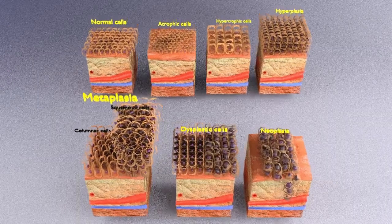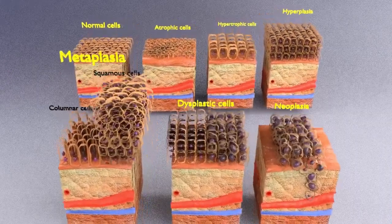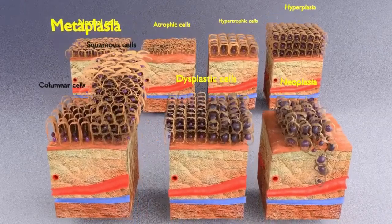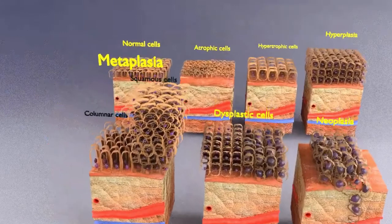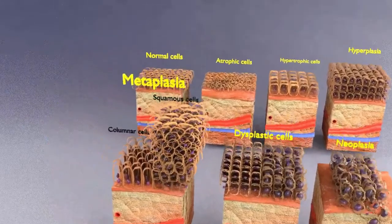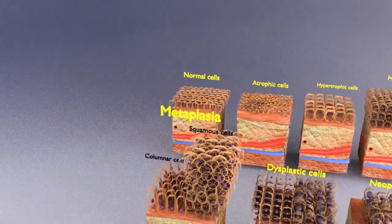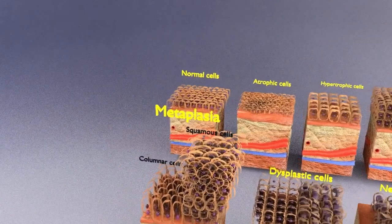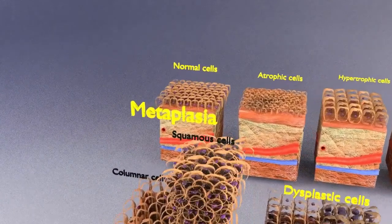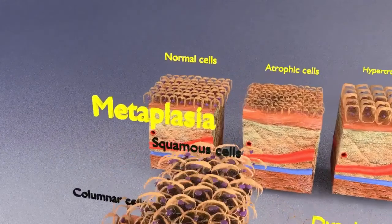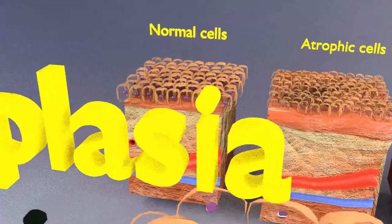This video is going to explain the changes that occur in a cell, or more commonly a group of cells or a tissue, in response to stress stimuli. These changes are called cellular adaptations. Many of these changes are reversible, few of them are irreversible, and occasionally these changes can be irreversible as well as harmful in the form of tumours.